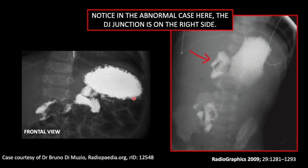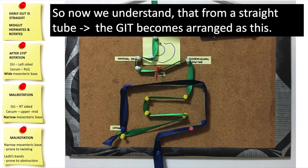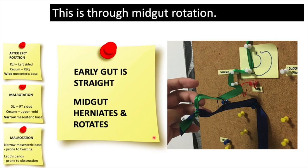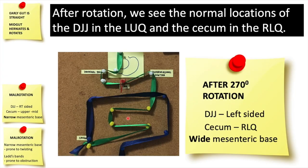In this abnormal case, notice that the DJ junction is on the right side of the spine, and the small bowels are located in the right hemi-abdomen. So now we understand that from a straight tube, the GIT becomes arranged in its normal manner through midgut rotation. The early gut is straight, but the midgut herniates and then rotates. After rotation, we see the normal location of the DJ junction in the left upper quadrant and the cecum in the right lower quadrant.